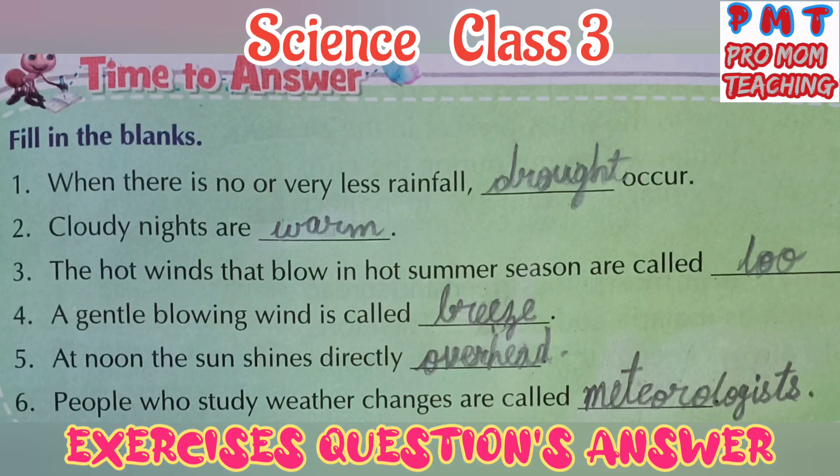Fill in the blanks. First, when there is no or very less rainfall, drought occurs. Two, cloudy nights are warm. Three, the hot winds that blow in hot summer season are called Loo.